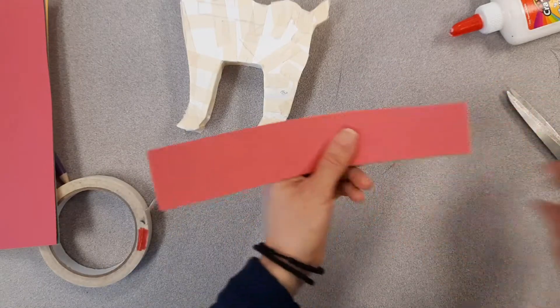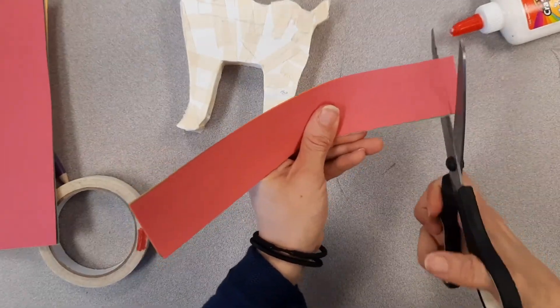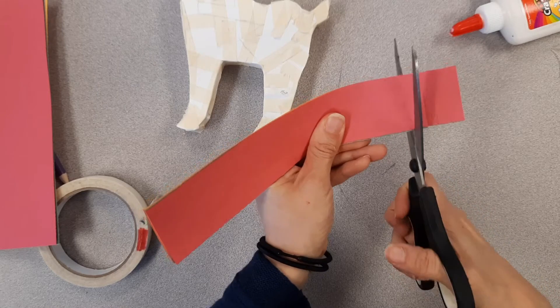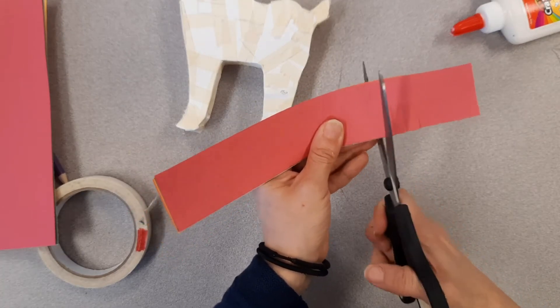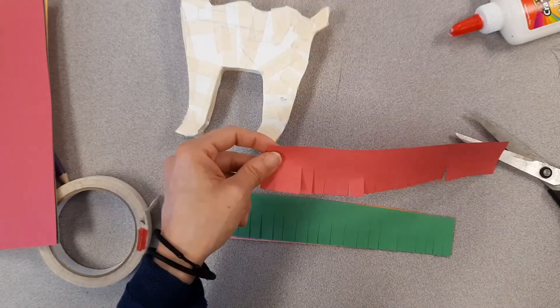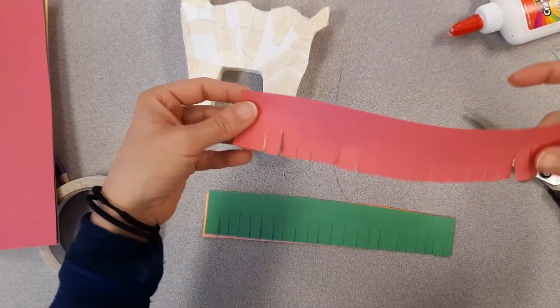Then you're going to take these and you're going to snip all these little lines almost about three-fourths up, all the way the length of your paper. You're going to end up with pieces like this.